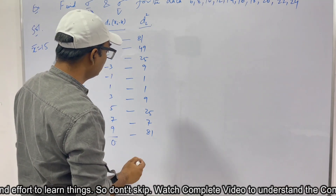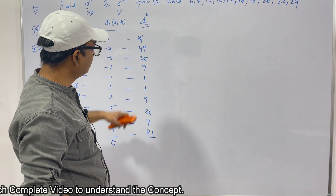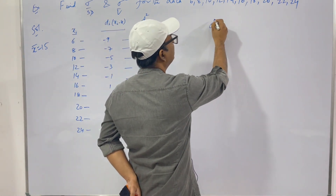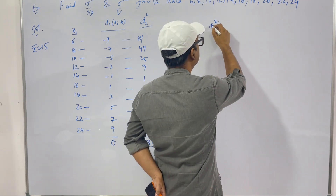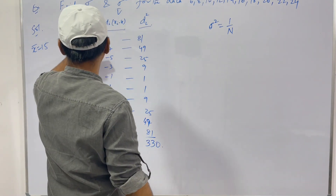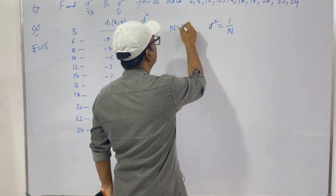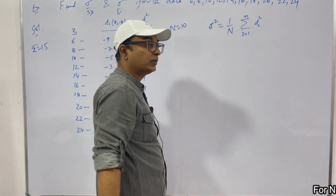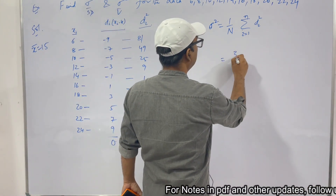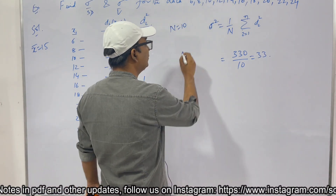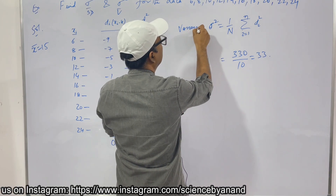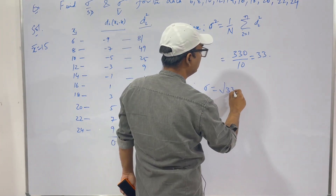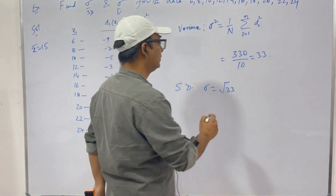Adding all the di² values gives 330. Variance = (1/n) · Σdi² = 330/10 = 33. Therefore standard deviation σ = √33 = 5.74. We have found the variance and standard deviation.